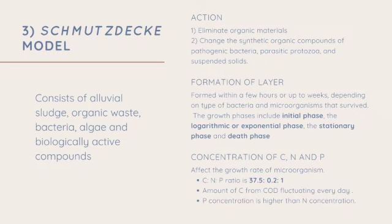The growth phase includes four phases: the initial phase, the logarithmic or exponential phase, the stationary phase, and the death phase of the bacteria. The concentration of carbon, nitrogen and phosphorus affect the growth rate of microorganisms, where the CNP ratio is 37.5 to 0.2 to 1. Amount of carbon from COD fluctuates every day and the P concentration is higher than nitrogen concentration.